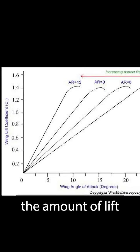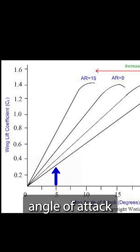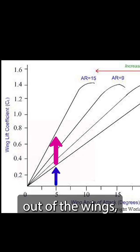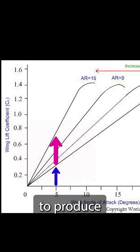When an aspect ratio increases, the amount of lift an aircraft can produce at a given angle of attack increases. Taking the sweep out of the wings allowed the airplane to produce more lift.